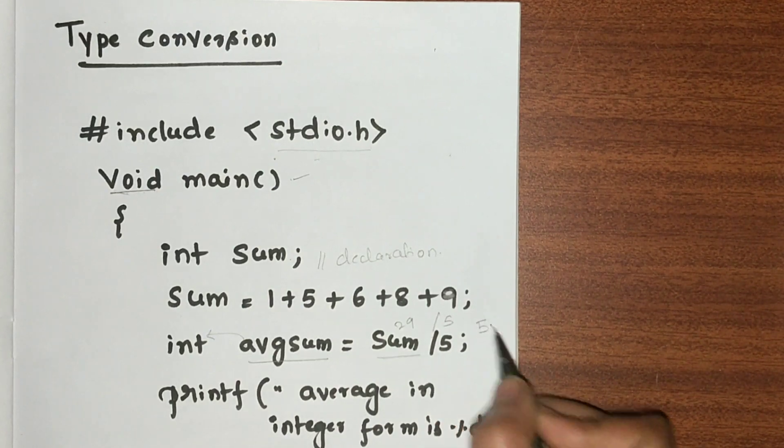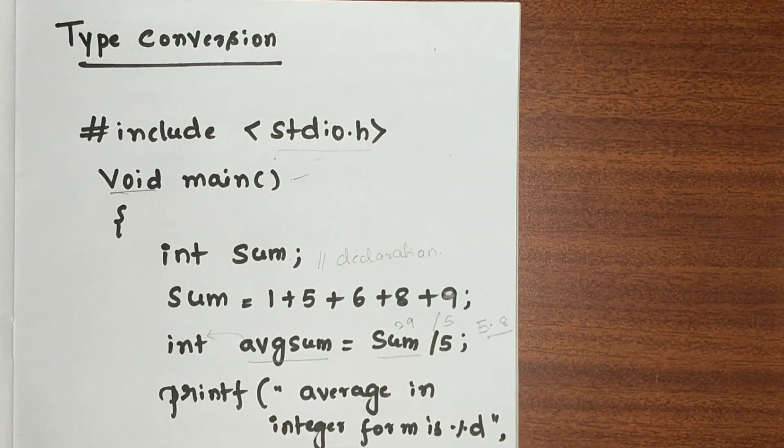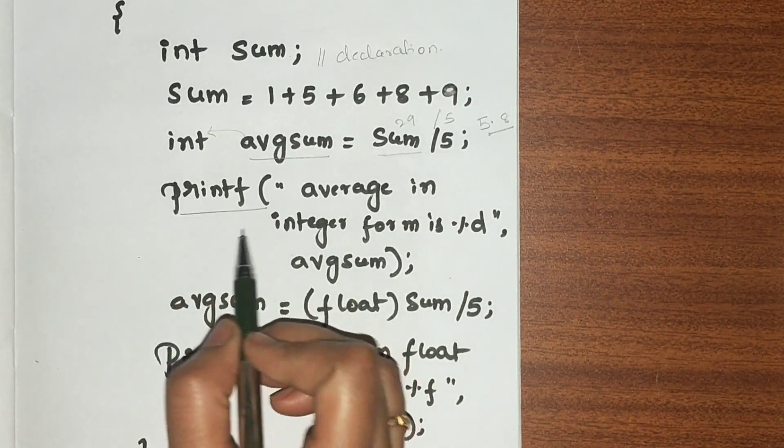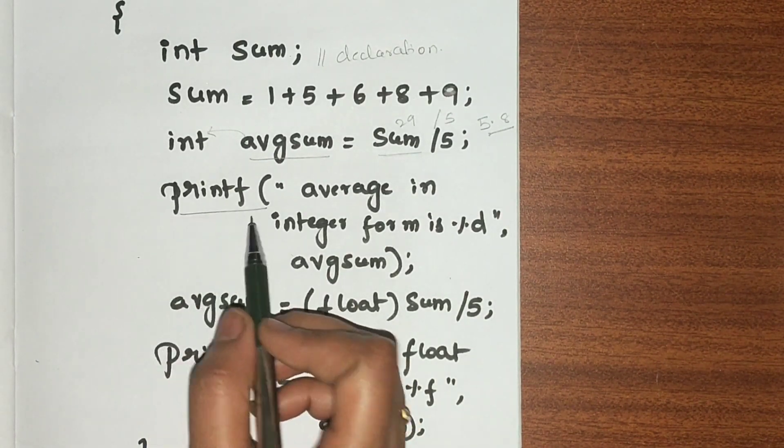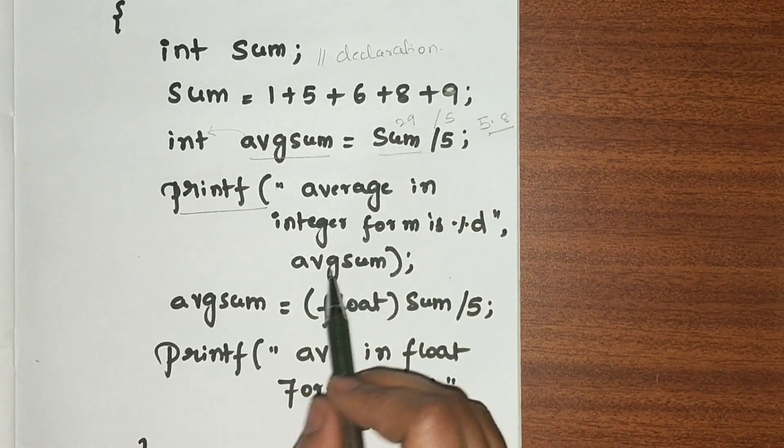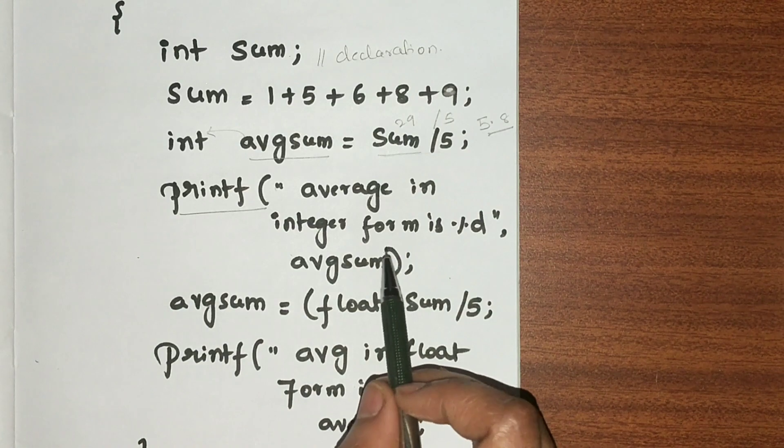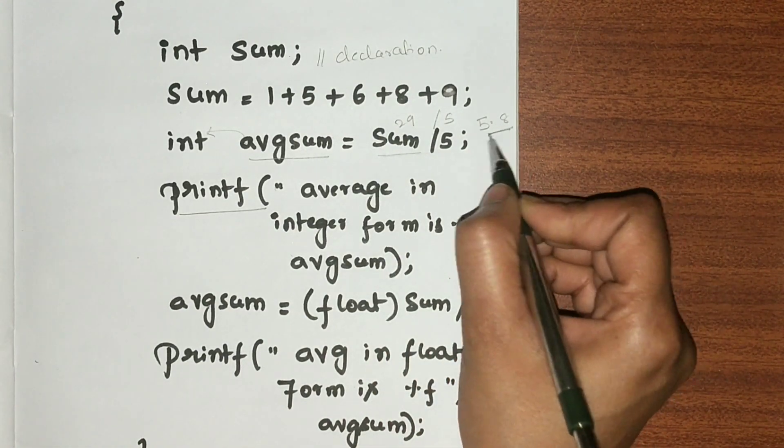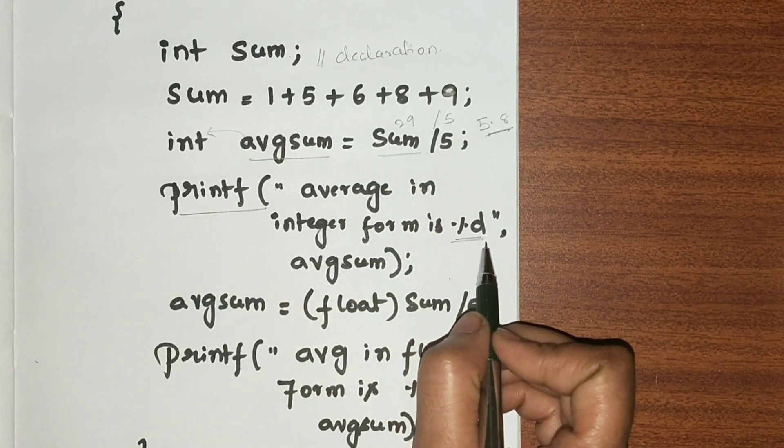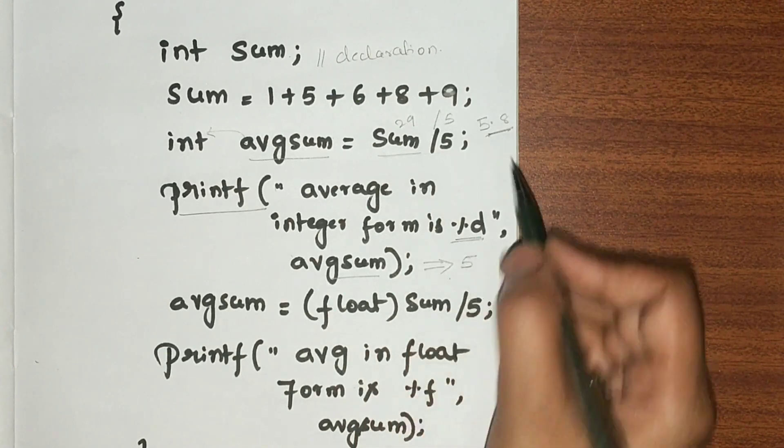Next, printf is an output printing statement. Now printf("average in integer form is %d", avgsum). Suppose I need to print the average in integer form—5.8 is our average—I specify %d. The avgsum will print as 5; the 0.8 will be omitted and just 5 will be printed.